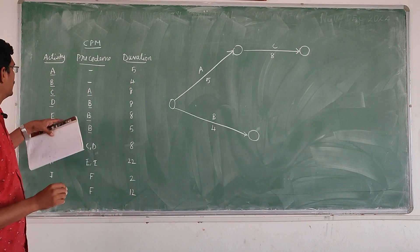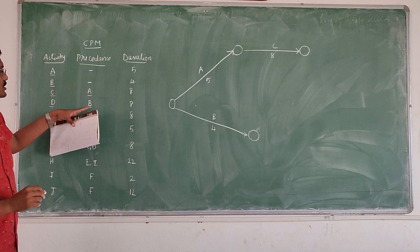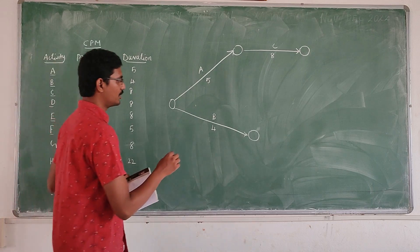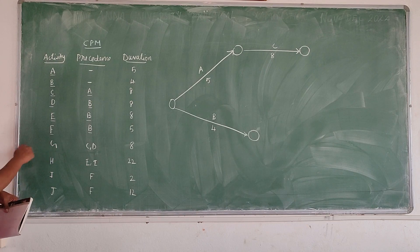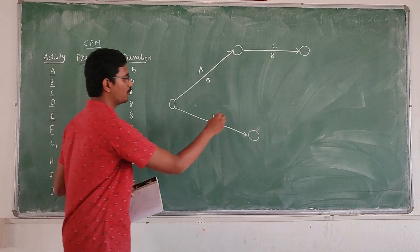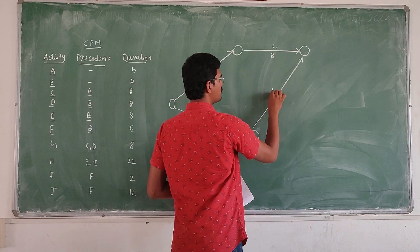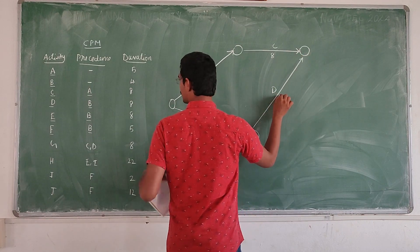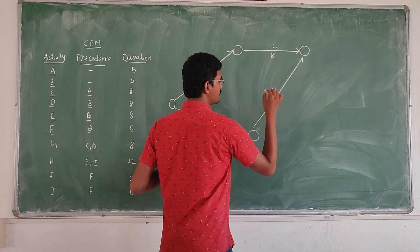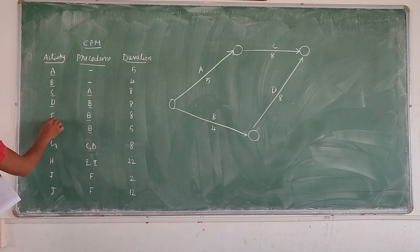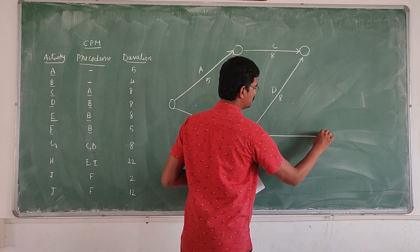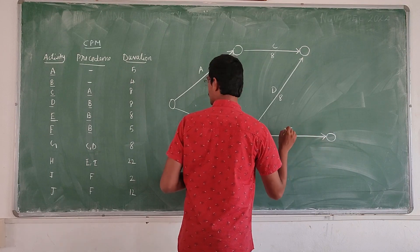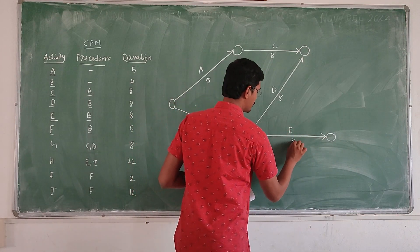Next we have to draw the D activity. D activity — B is the precedence activity. We also need to check C and D as the precedence for the G activity. D has a duration of 8. After that we can draw the E activity. E activity, the precedence is B, and the E activity duration is also 8.